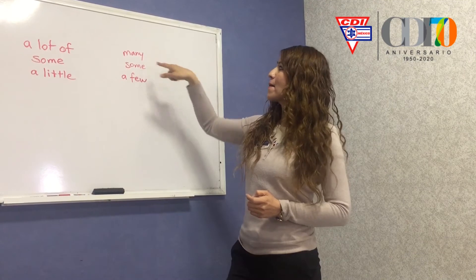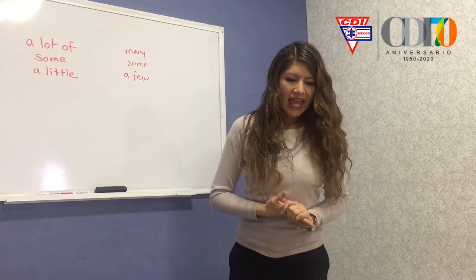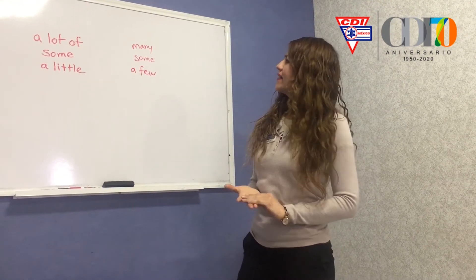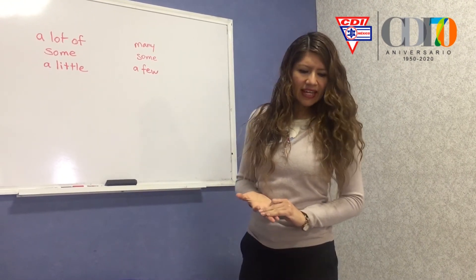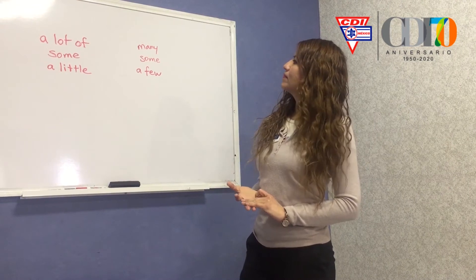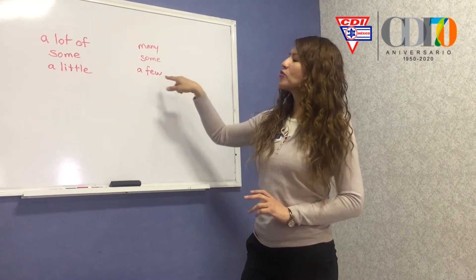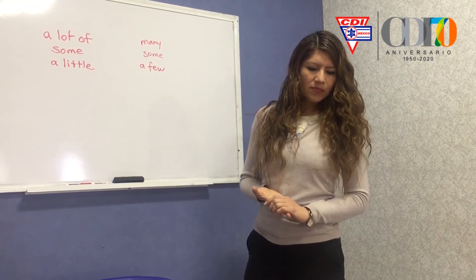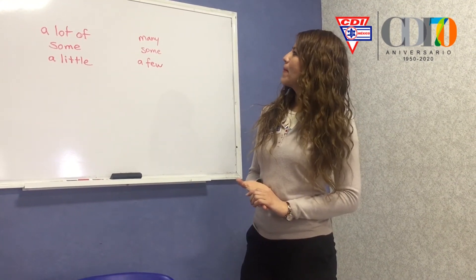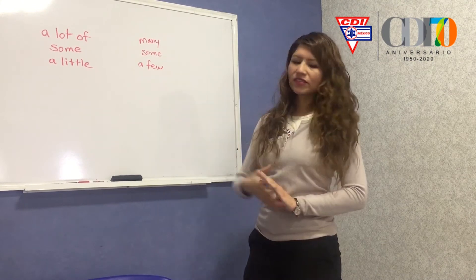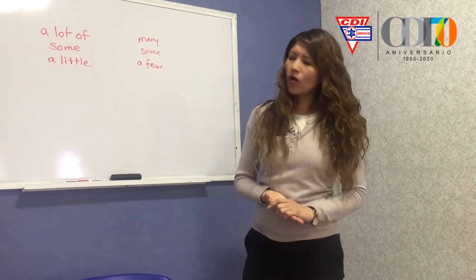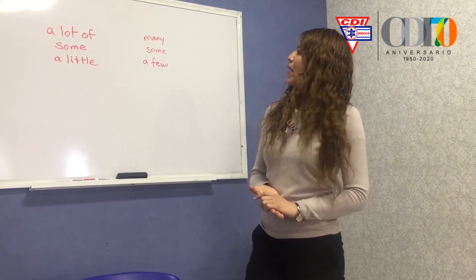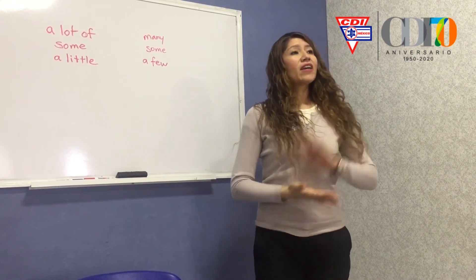We're going to buy many balloons, and we need a cake — we're going to buy a cake — and we're going to buy a few snacks. For example, let's buy some nachos, and we're going to buy many plastic cups.